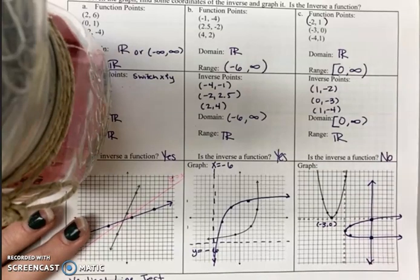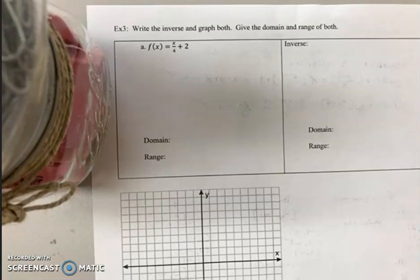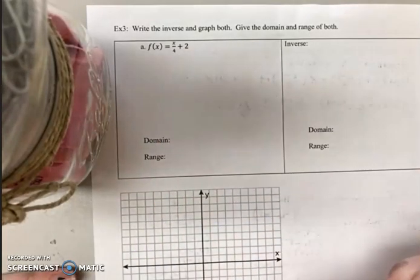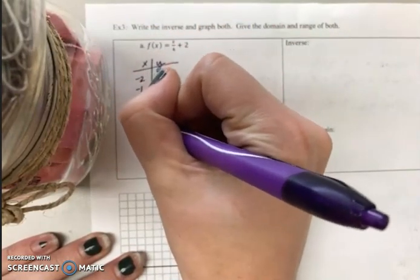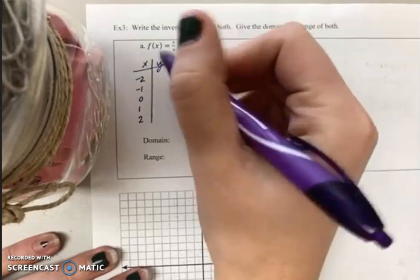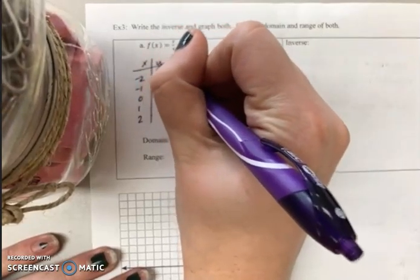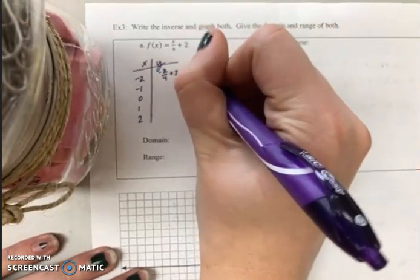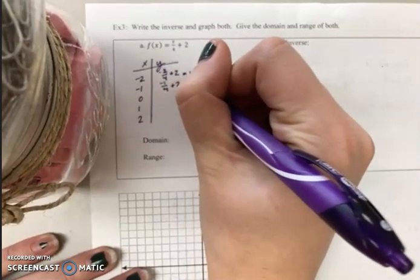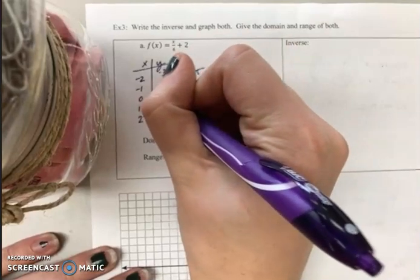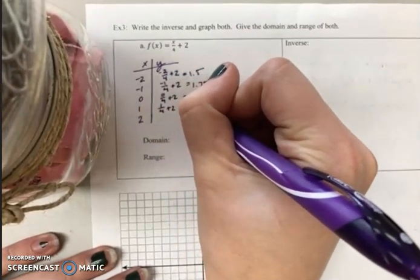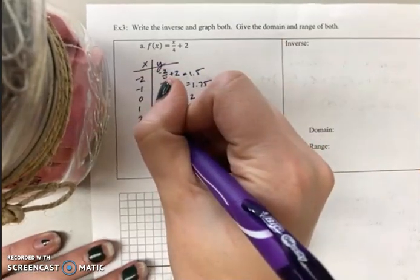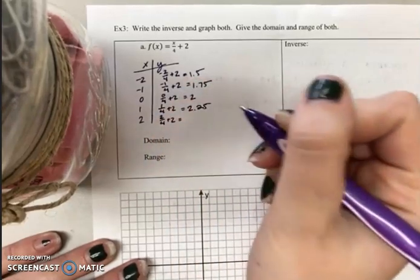It crosses twice, so the answer is no, that is not a function. Now we're going to write the inverse, graph both, and give the domain and range of both. If I'm going to be graphing x over 4 plus 2, the first thing I'd like you to do is create a table using -2, -1, 0, 1, and 2. To get the y values, just plug them in: -2 over 4 plus 2 is 1.5; -1 over 4 plus 2 is 1.75; 0 over 4 plus 2 is 2; 1 over 4 plus 2 is 2.25; and 2 over 4 plus 2 is 2.5.